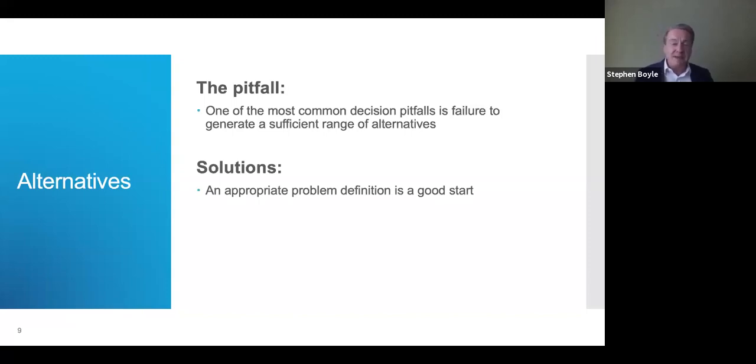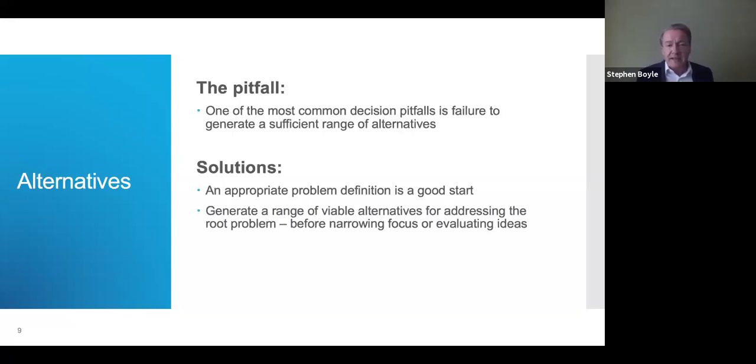So not only do we have maybe a rather paltry set of alternatives, but they may be alternatives for solving the wrong problem. So an appropriate problem definition is a very good start. Additionally, the generation of alternatives should always precede the evaluation. Time and again we see decision processes where even the discussion of alternatives is blended with evaluation. An idea is floated and somebody says, yeah, but that wouldn't work because this or that wouldn't work because that. We actually need to train ourselves into separating idea generation from idea evaluation.